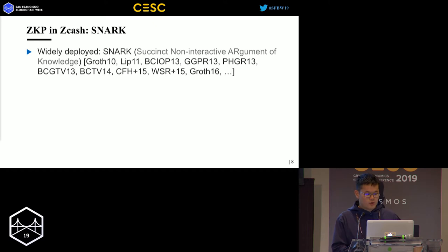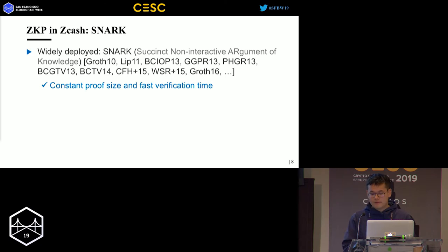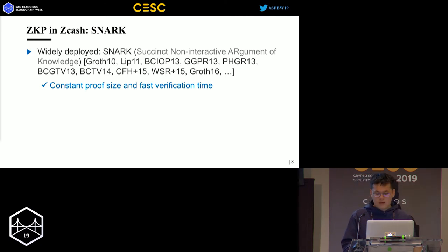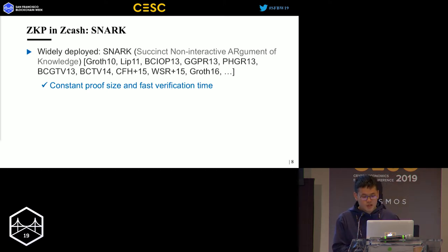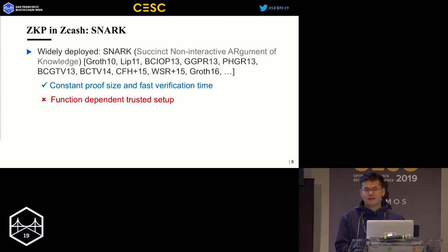zk-SNARKs is also widely deployed. SNARK stands for Succinct Non-interactive ARgument of Knowledge. It has some really good properties — for example, it has constant proof size and fast verification time. However, it also has some shortcomings that limit its implementation. Firstly, it needs a function-dependent trusted setup, which means it needs to do preprocessing for each function, and that is very slow.